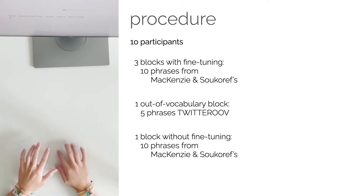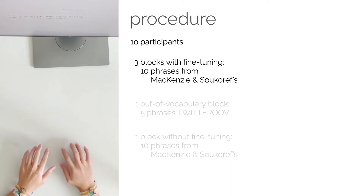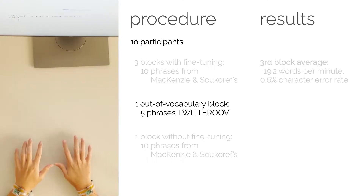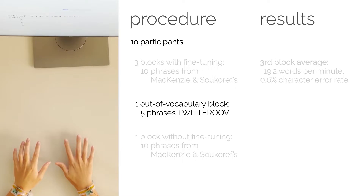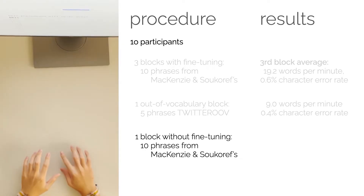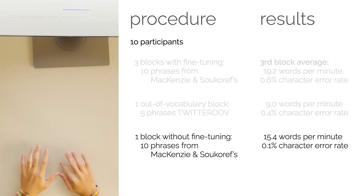Second, we evaluated TapType in an interactive setting, online and end-to-end. We recruited 10 participants who used TapType on a table surface. After training on a few sentences, participants transcribed three blocks of 10 phrases from the McKenzie and Socoros dataset. On average, they entered text at a rate of 19 words per minute in the third block. TapType also supports out-of-vocabulary text input, which requires character-by-character entry. For phrases from the Twitter out-of-vocabulary dataset, the average speed was 9 words per minute. With a participant-agnostic model — meaning without fine-tuning — participants still entered text at more than 15 words per minute, while the character error rate remained close to zero.